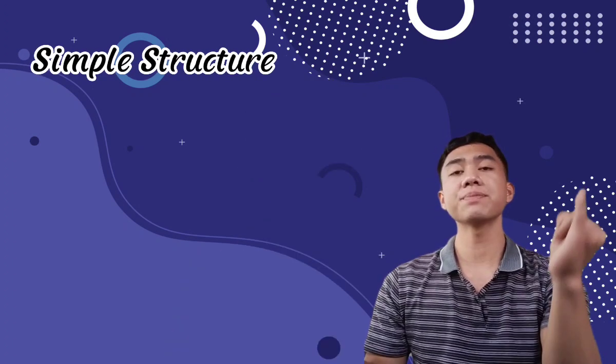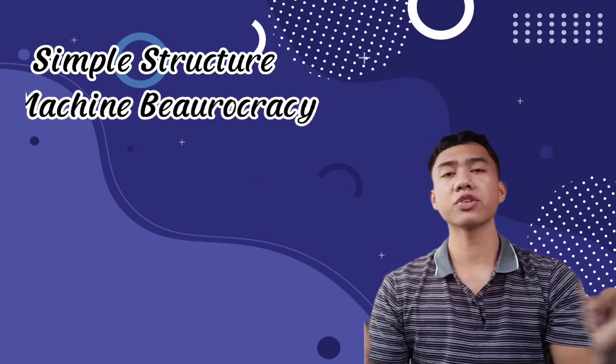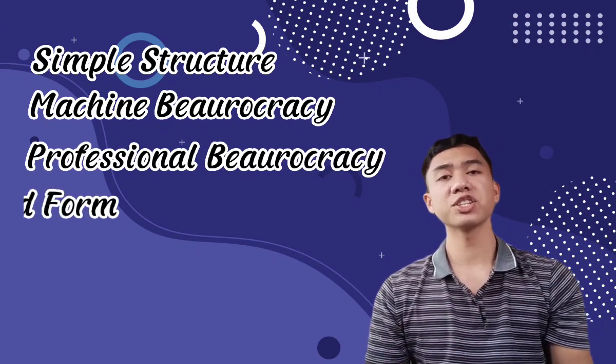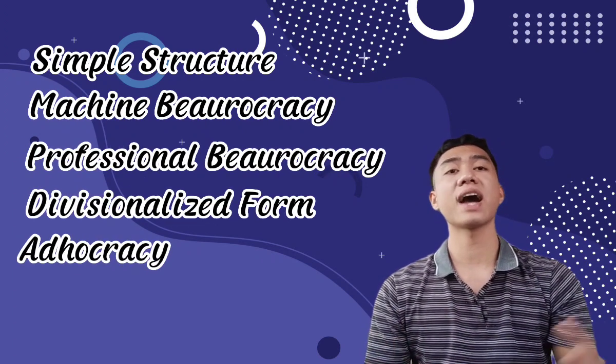Using the three basic dimensions — the key part of the organization, the prime coordinating mechanism, and the type of decentralization — Mintzberg suggests that the strategy an organization adopts and the extent to which it practices the strategy result in five structural configurations: the simple structure, the machine bureaucracy, the professional bureaucracy, the divisionalized form, and the adhocracy.